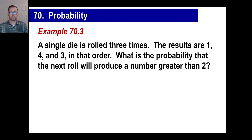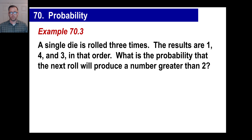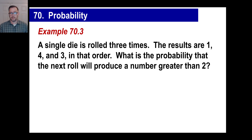Now let's look at a die problem. A single die is rolled three times — you roll a one, a four, and a three. Remember, if you have a normal fair die, it doesn't matter what happened before. What you do the next time is completely a self-contained possibility. They ask: what's the probability that the next roll will produce a number greater than two?